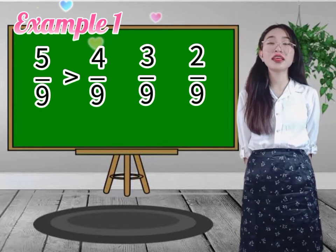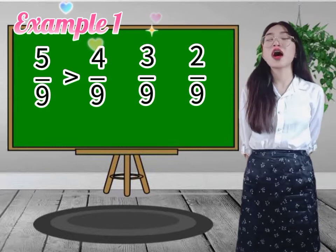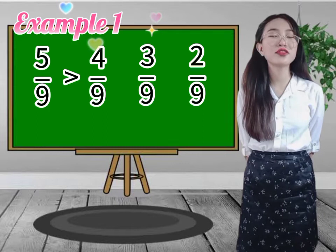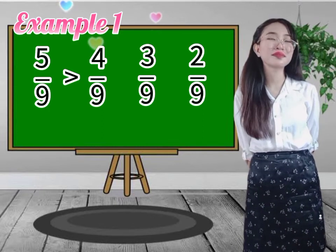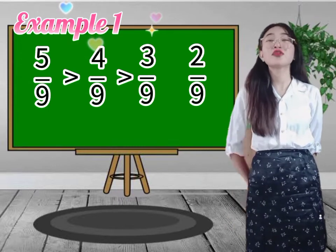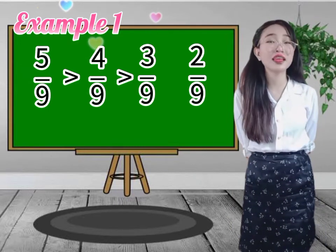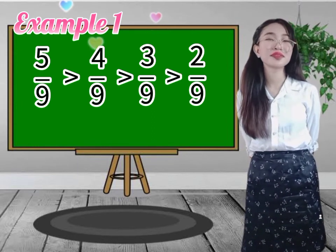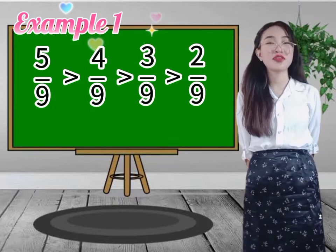Very good — it is greater than. How about if we compare 4 and 3, what symbol will we use? Very good, it is still greater than. How about 3 and 2, what symbol will we use? It is greater than.